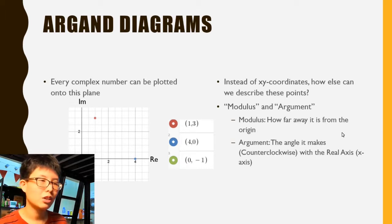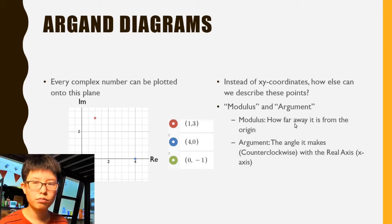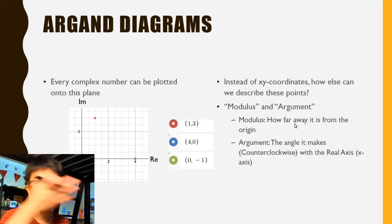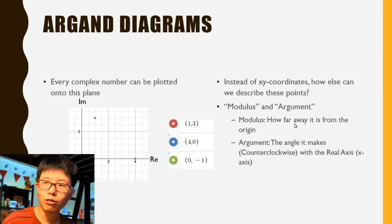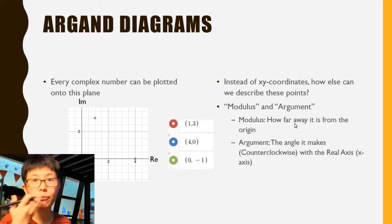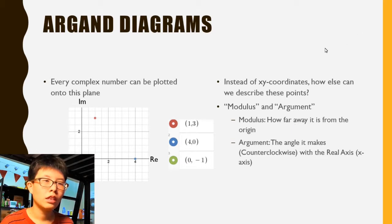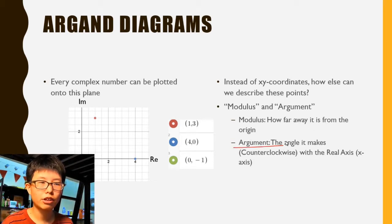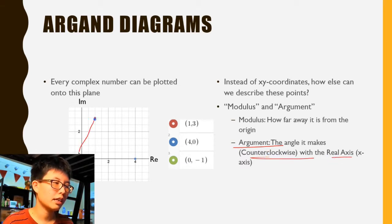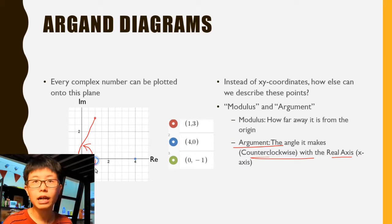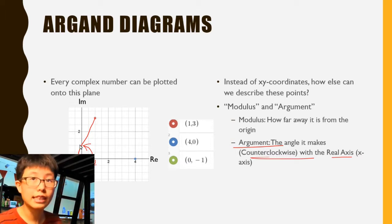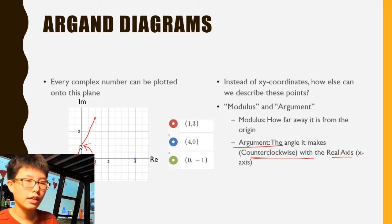So instead of xy coordinates, we can also use modulus and argument to describe these points. It's kind of like navigating — instead of saying move left, right, up, or down, you say 'go southwest for ten kilometres.' I'm telling you which direction to go and how far to go. We always start from the origin. The argument is the angle the line makes counterclockwise with the real axis — going clockwise gives a negative angle. The modulus is always positive; it's how far you are from the origin.